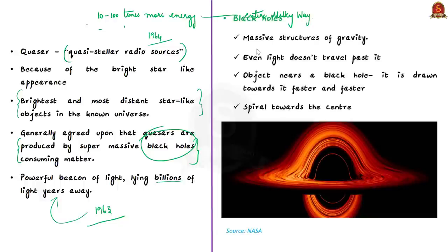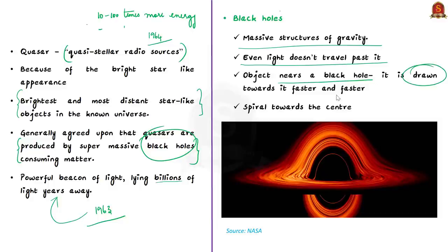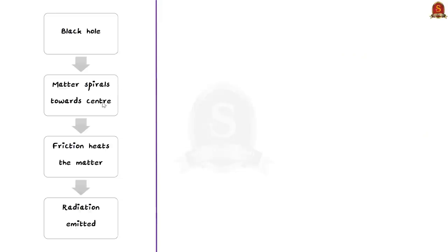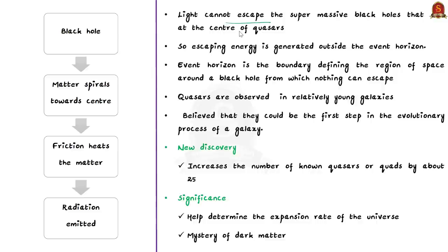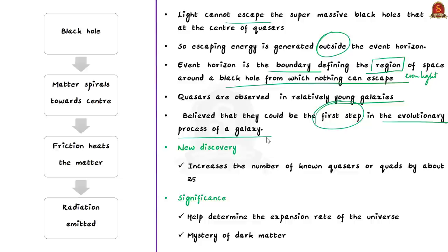In 1963 the first measurement of the distance to a quasar showed it to be an enormously powerful beacon lying billions of light years away. We know black holes are massive structures of gravity that even light doesn't travel past it. When an object nears a black hole it is drawn towards it faster and faster in that process. The objects that are drawn are set off for a spin around the black hole with increasing velocity as they spiral towards the center. As the matter spins faster it gets heated up thus giving off massive amounts of light and other forms of radiation such as x-rays, light rays, gamma rays and radio waves. Since light cannot escape the supermassive black holes that are at the center of quasars, the escaping energy is actually generated outside the event horizon. An event horizon is the boundary defining the region of space around a black hole from which nothing, not even light can escape.